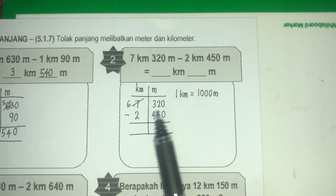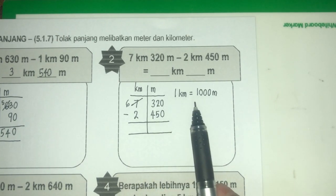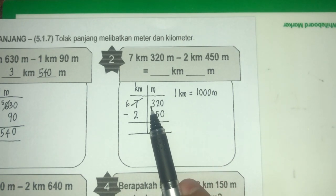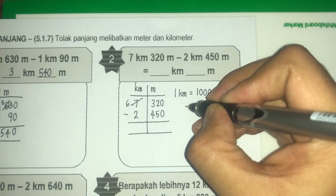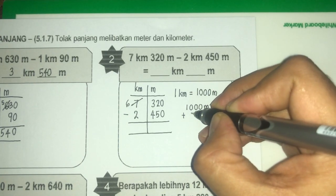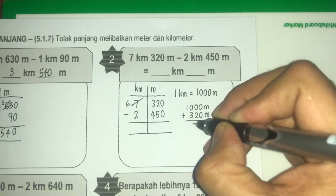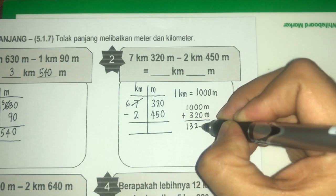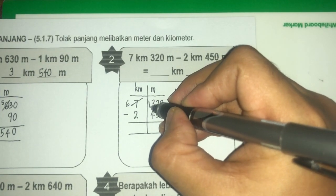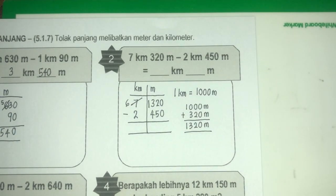Bila kita pinjam 1 kilometer daripada rumah kilometer dan bawa masuk ke rumah meter, dia akan jadi 1,000. Jadi 1,000 ni tambah dulu dengan 320. Jadi 1,000 meter tambah dengan 320 meter, kita dapat 1,320 meter. Cikgu letak nombor 1 je kat depan — dia terus jadi 1,320 meter.